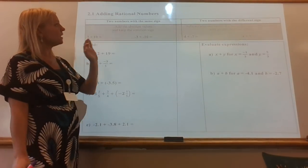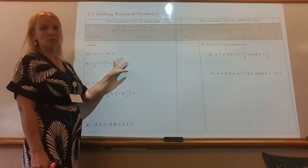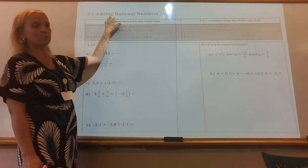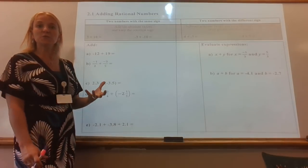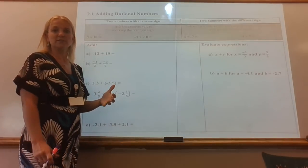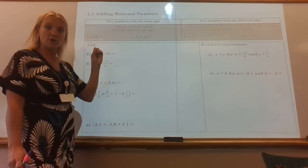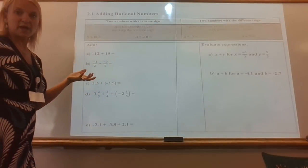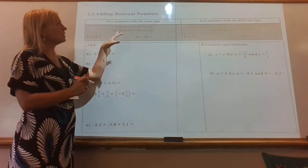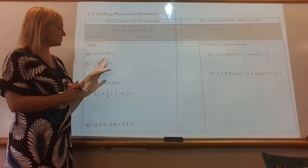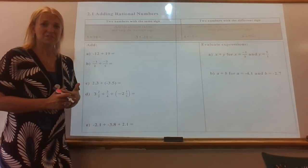Hey, hello class. Today we are going to take our notes over Unit 1, Accentuate the Negative, Section 2.1, which is adding rational numbers. So far we've been doing adding and subtracting with just regular integers, which are our whole numbers, using our number line and our balloon analogy. Now we're going to think about how do I use negative numbers that are fractions and decimals? How do I add those up?